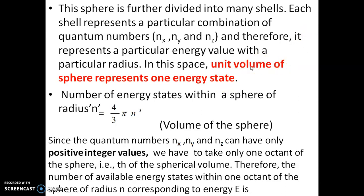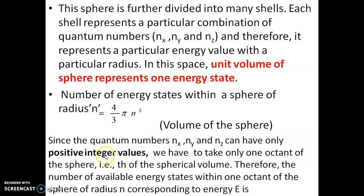So the total volume of the sphere represents the total number of energy states. The number of energy states within the sphere of radius N is given by (4π/3)N³, where (4π/3)N³ is the volume of the sphere. Since the quantum numbers Nx, Ny, Nz take only positive integer values, we divide the sphere into 8 parts called octants.